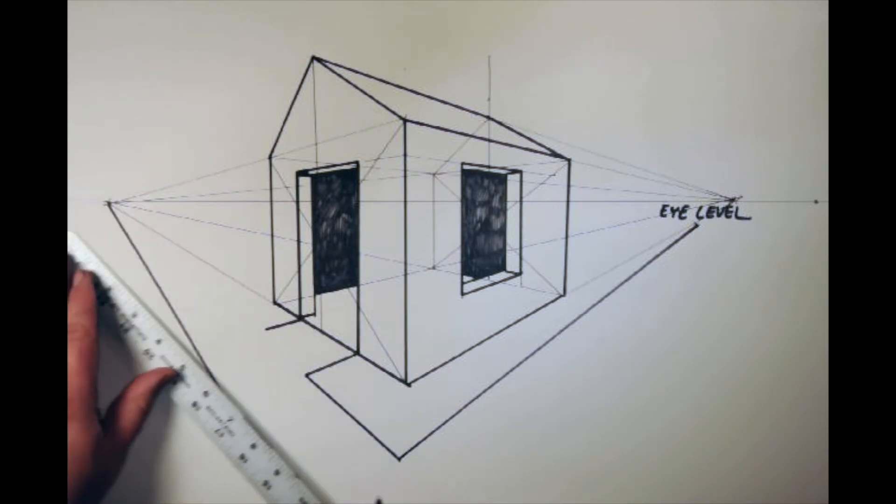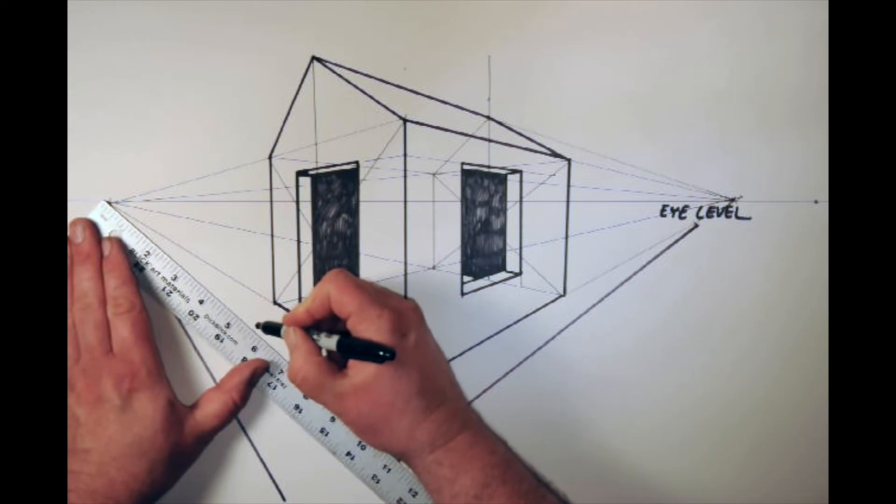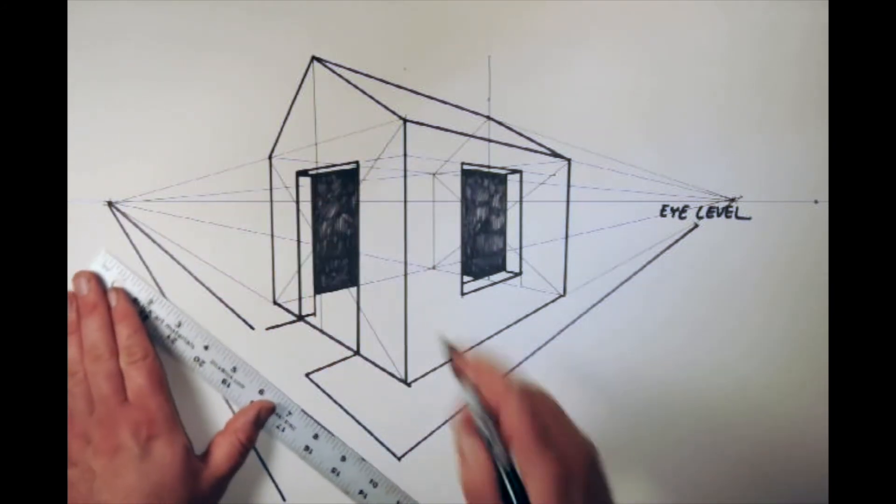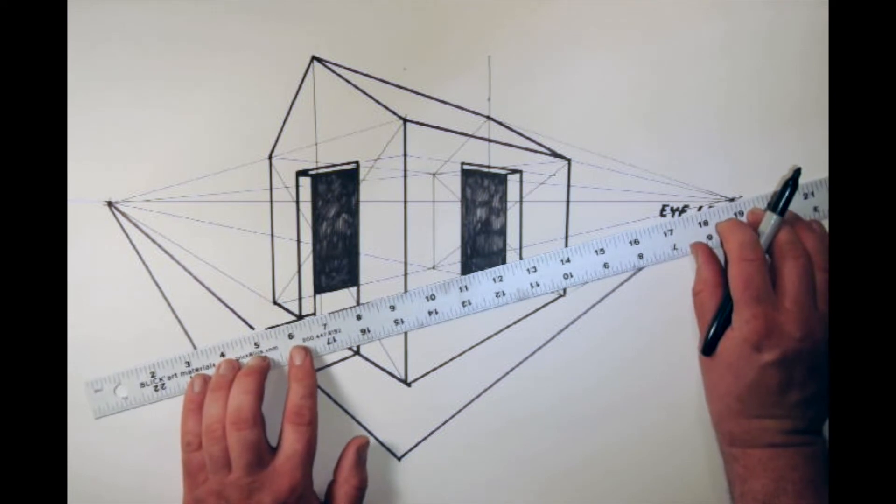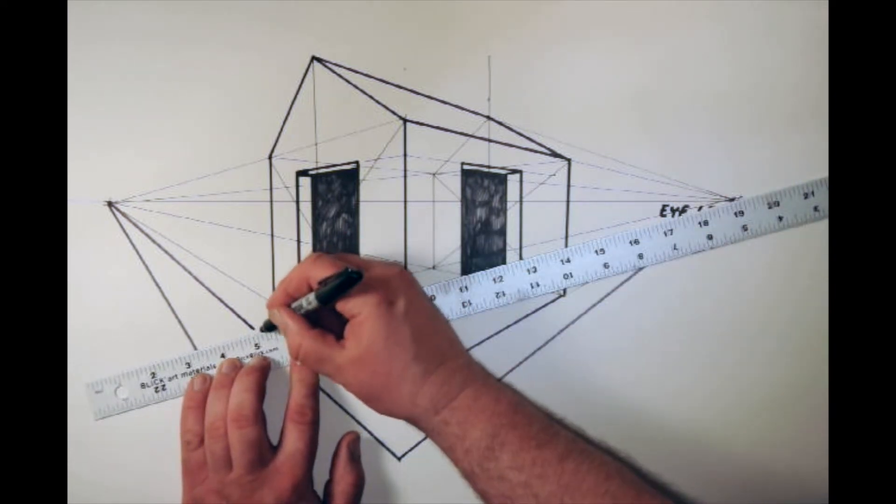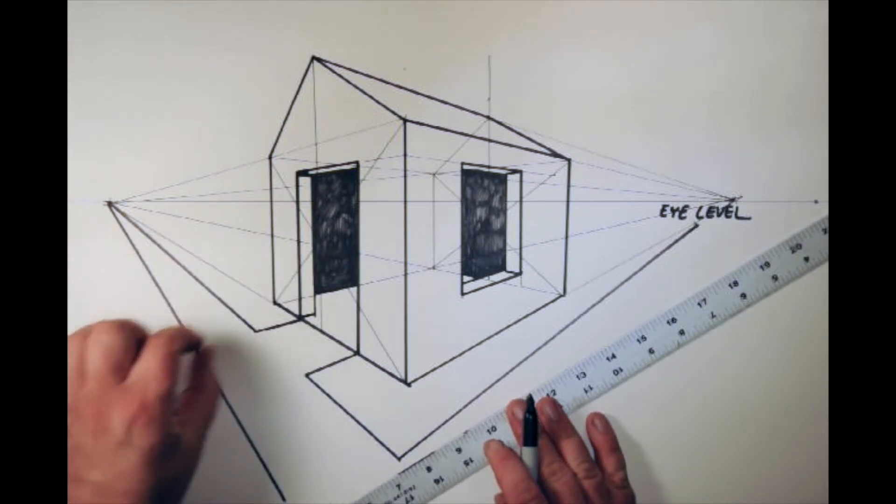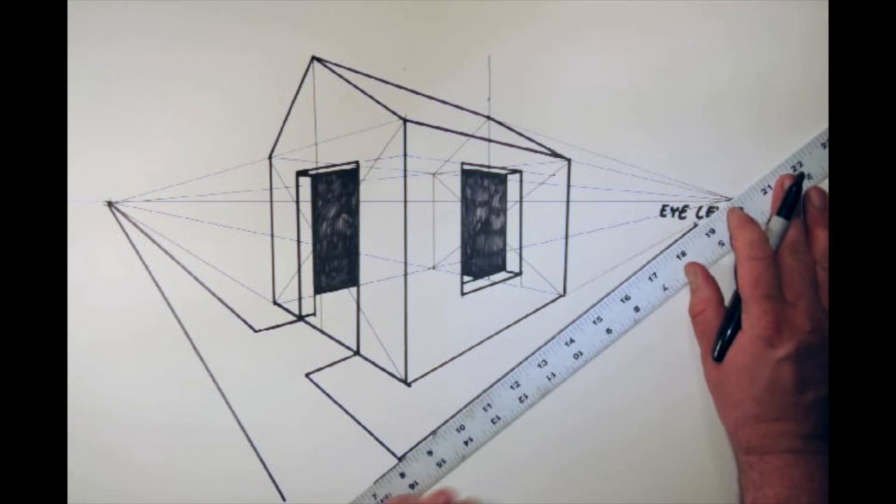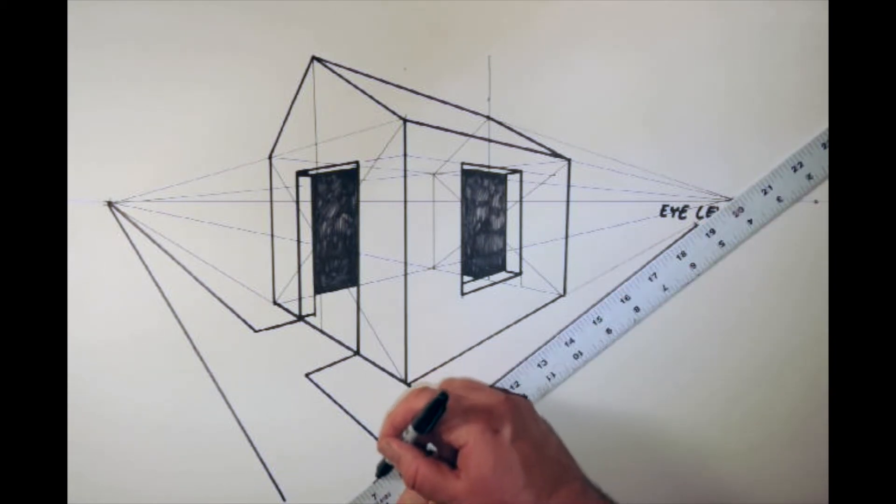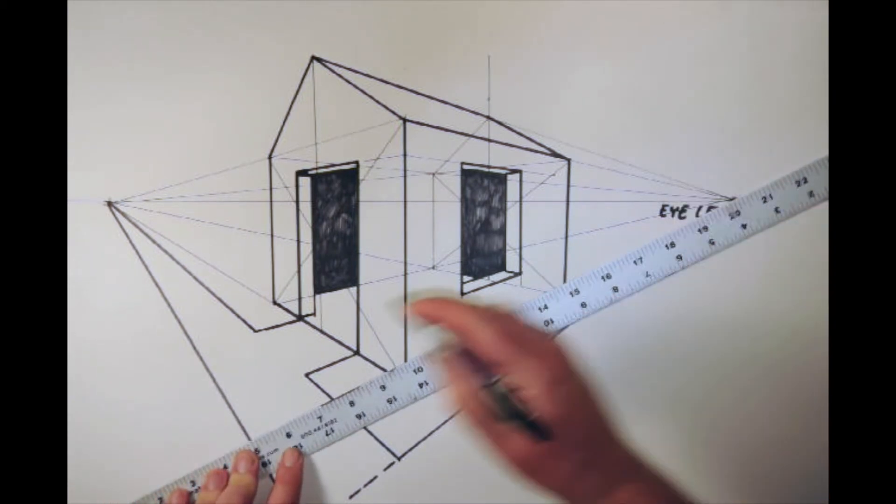Sidewalk goes back to that vanishing point there. I just need to connect this up. And then if I had some breaks in the sidewalk where the concrete meets the concrete, I can draw some little breaks. I think there's one here.